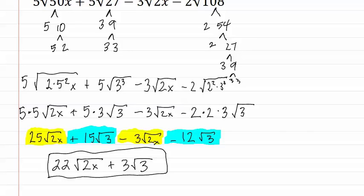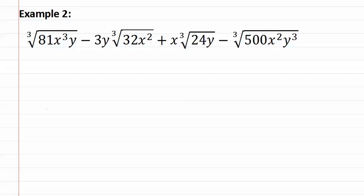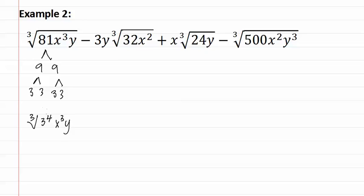Let's look at example two. As you can see, there are large numbers inside each radical, so first we will find the prime factorization of each of these numbers. Eighty-one is nine times nine, which can be reduced to three and three and three, which means we have the cubed root of three to the fourth x to the third y.